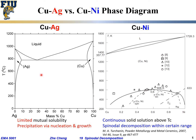The one on the left, people call it a binary eutectic phase diagram, because that is the lowest melting temperature in between. This is single phase liquid. This is single phase silver — almost pure silver with a little bit of copper dissolved uniformly in it. This is single phase solid copper with a little bit of silver dissolved in it. This is the two phase region between liquid and solid copper, this is the two phase region between liquid and solid silver, and this would be the two phase region between solid silver and solid copper. That's how we understand this phase diagram.